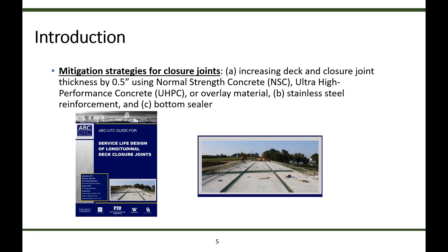The guide presented about five alternatives for closure joints with different geometry shapes and reinforcement configurations. For each alternative, several mitigation strategies along with estimated service life and cost items were presented. The mitigation strategies include combinations such as increasing deck and closure joint thickness by half an inch, using normal strength concrete, UHPC overlay material, stainless steel reinforcement, and bottom sealers. We would like to briefly walk you through the details of service life calculation, Fick's second law implementation steps, and then demonstrate the web-based tool.